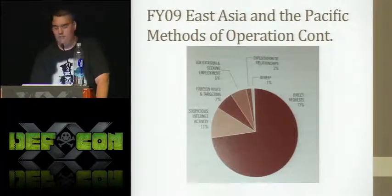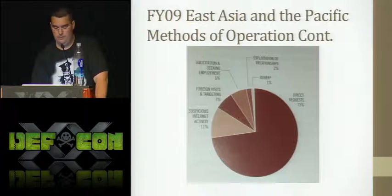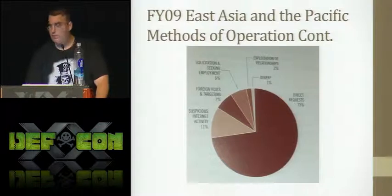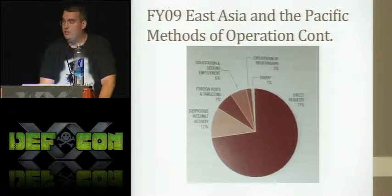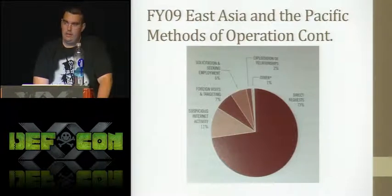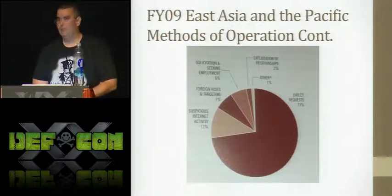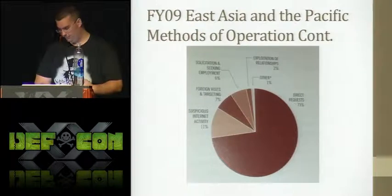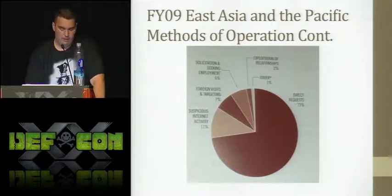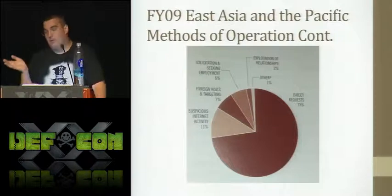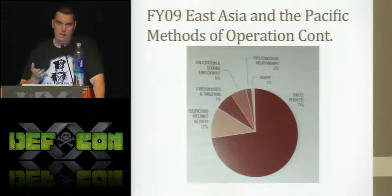Here is actual data from DSS on foreign collection attempts, for East Asia and Pacific in FY09. Direct requests — people just asking to be sent classified material — don't work so well. Solicitation seeking employment is around 6%: foreign actors sending resumes to try to work in the classified world. Sometimes HR people hire them, a background check is done, and hopefully DSS sees they work for the PLA or Kremlin. These are people being paid to infiltrate a company and steal classified information.